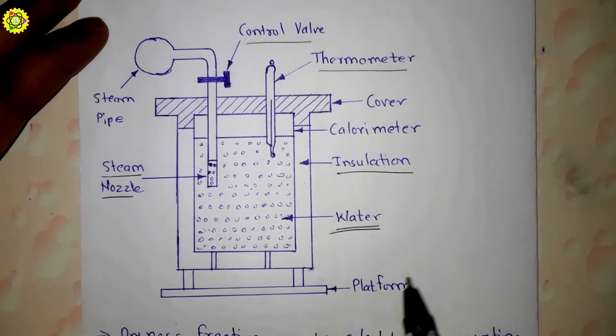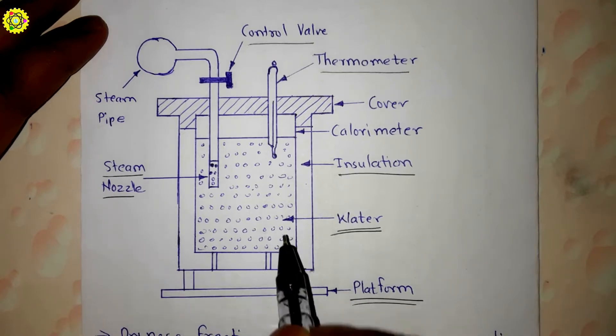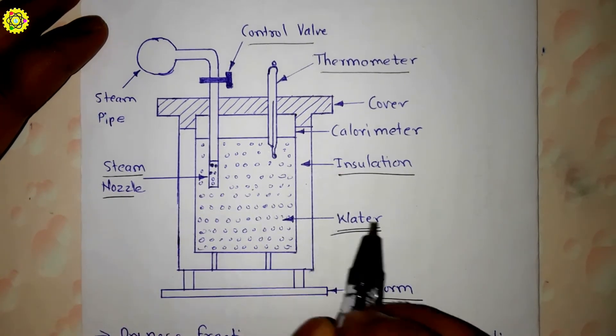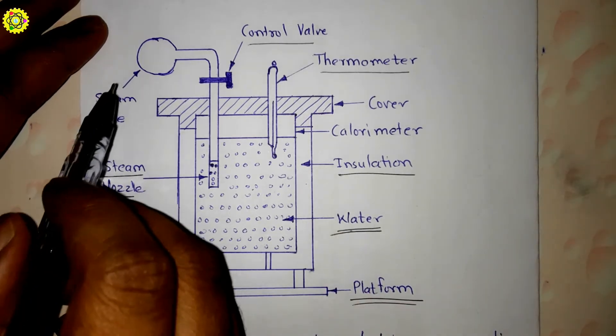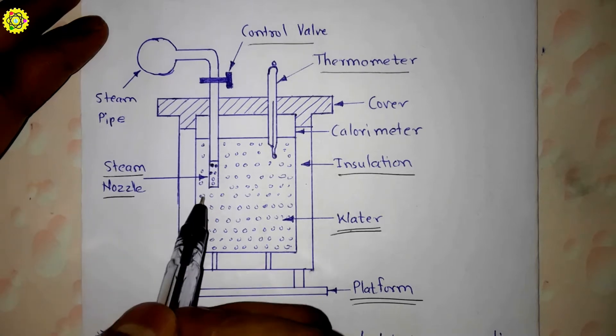Here it is a thermometer to measure the temperature of our mixture. This is the insulation and here this water and this is the platform. As I have told you, this barrel calorimeter is filled with the known quantity of water.